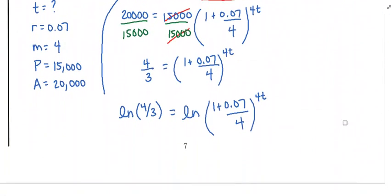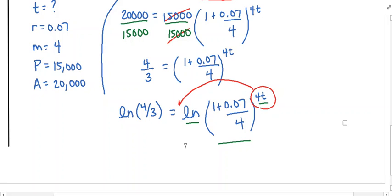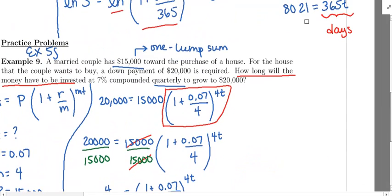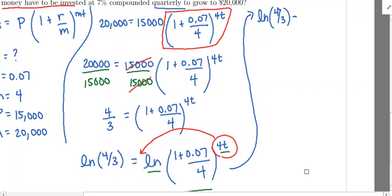On the right side, I have the natural log of something to a power, so I'm allowed to take the power and bring it down. You cannot bring down the power without the logarithm — that's why we had to do that. So we're going to have the natural log of four thirds equals four T — that power comes down — times the natural log of one plus point zero seven divided by four. The T is now out of the power.